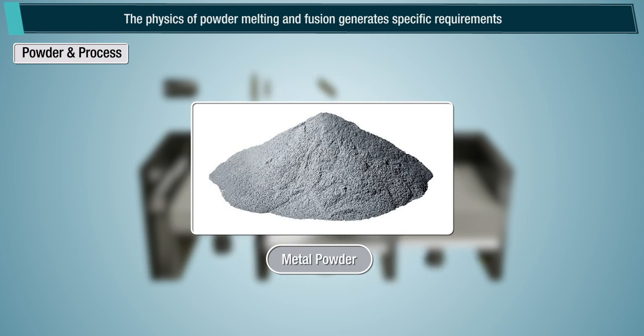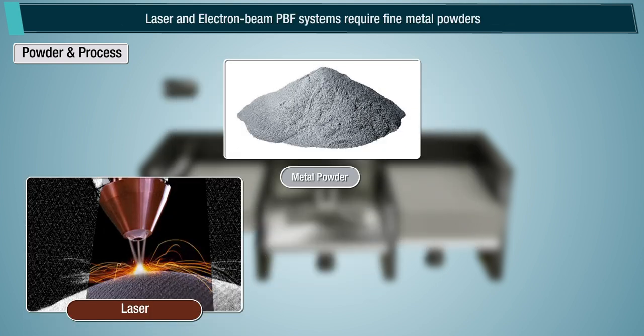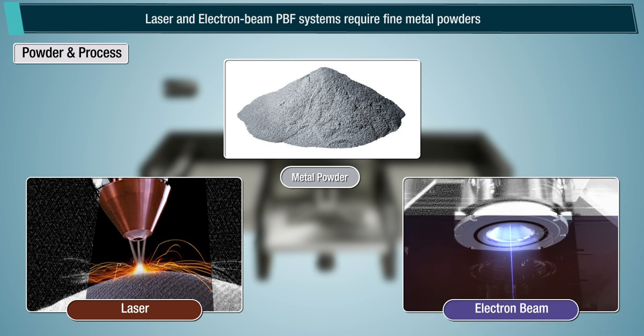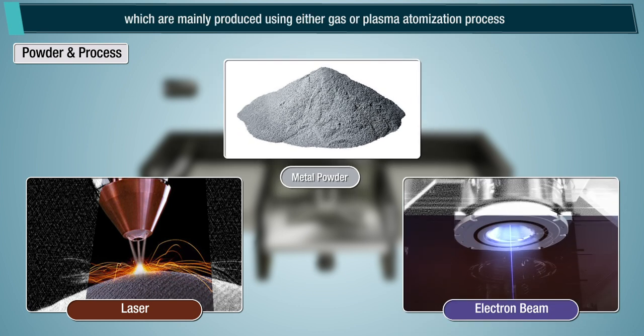The physics of powder melting and fusion generates specific requirements for the metal powder around the powder particle size and morphology (shape). Laser and electron beam powder bed fusion systems require fine metal powders, which are mainly produced using either gas or plasma atomization processes.